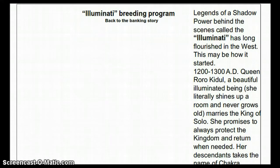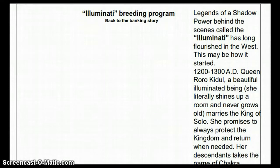Now I'm going to jump ahead, but I will make this entire document available for you to study. I'm going to show you exactly who the gentleman signing the dollars was, who Socorno was, and how he came to be. It's called the Illuminati Breeding Program. Legends of a shadow power behind the scenes called the Illuminati has long flourished in the West — this may be how it started.